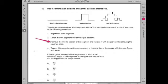Step 3. Remove the middle section of the line segment and replace it with a square while removing the square's base. Step 4. Repeat the procedure with each segment in the figure, then again with the next figure, and so on.